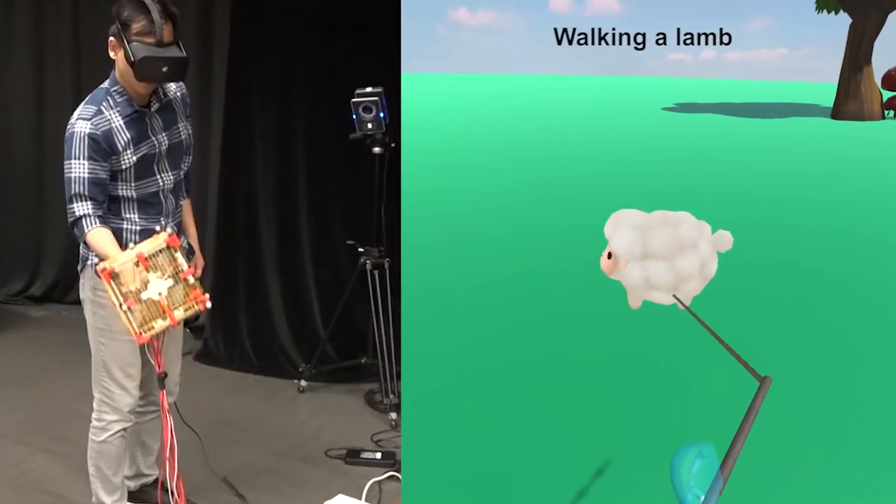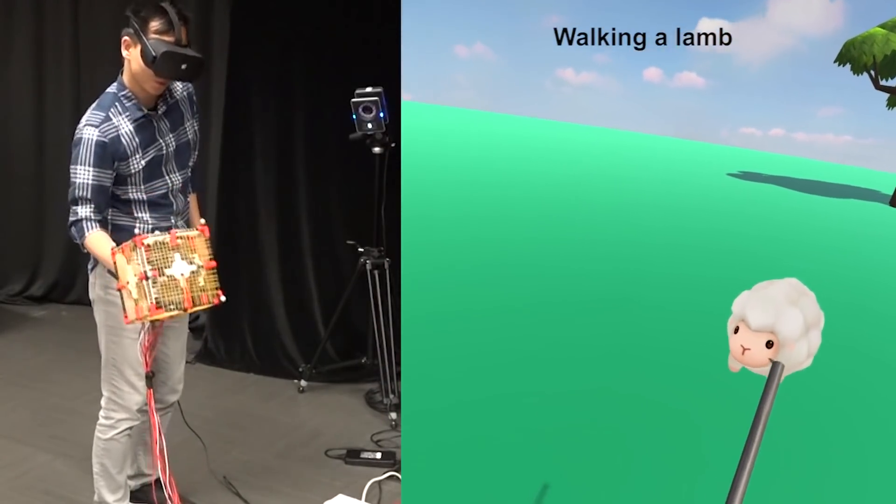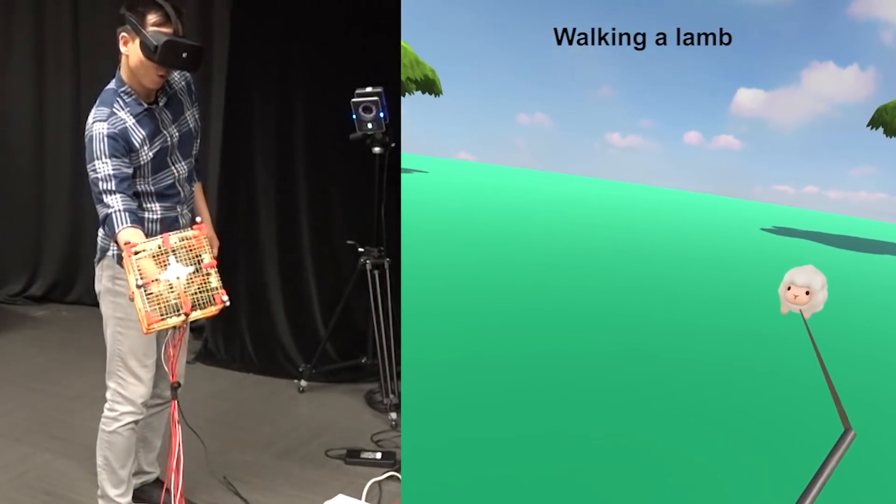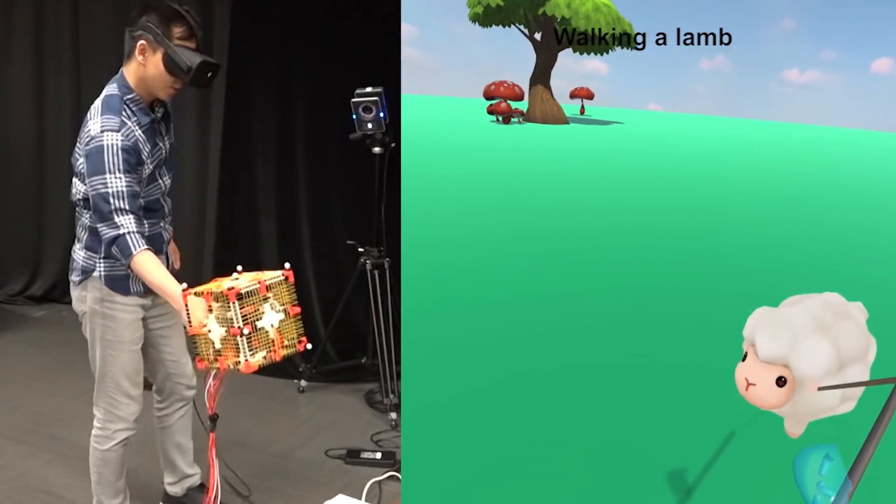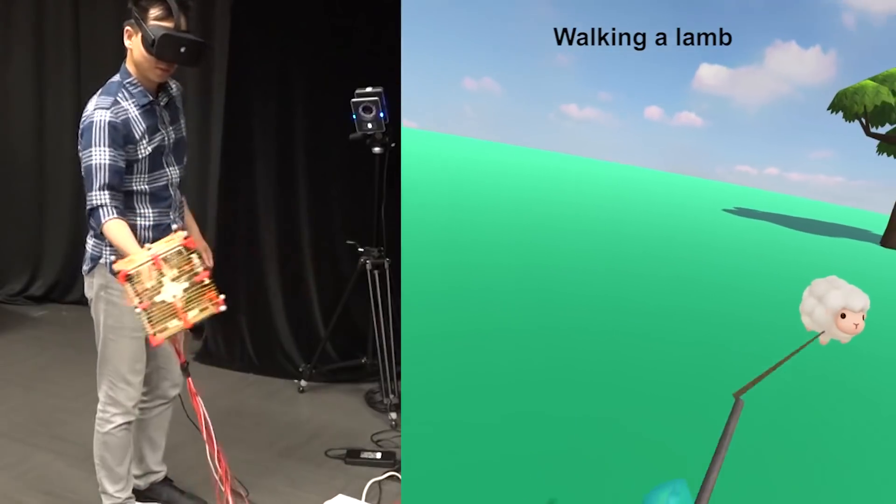Second, herding sheep. As you are walking a leashed lamb, you begin to feel a tugging force as the lamb walks. Thor's hammer controls the direction and the strength of the force feedback you experience based on the relative position of the lamb and the orientation of your hand.